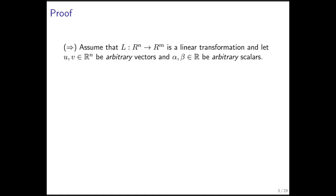We're first going to prove it from left to right. We're going to assume that L is a linear transformation, then choose u and v to be arbitrary vectors and alpha and beta to be arbitrary scalars. We're going to start by first taking the linear combination of the vectors and then transforming it, and then prove that you can first transform and then take the linear combination.